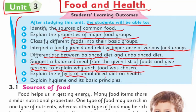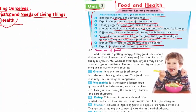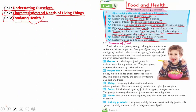Further SLOs include: explain the effect of an unbalanced diet on health, and explain hygiene and its basic principles. Hygiene is very important, dear students. We are Muslims and we believe in a hygienic environment. Achieving all these SLOs, we will study different topics in this chapter inshallah, and all these SLOs are covered in those topics.